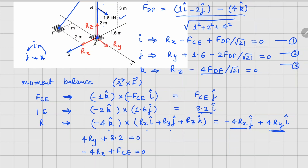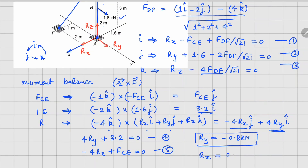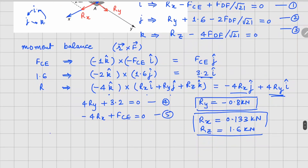We now have five equations for five unknowns. From the fourth equation, Ry = −0.8 kN. Substituting back gives Rx = 0.133 kN, Rz = 1.6 kN, F_CE = 0.533 kN, and F_DF = 1.833 kN.